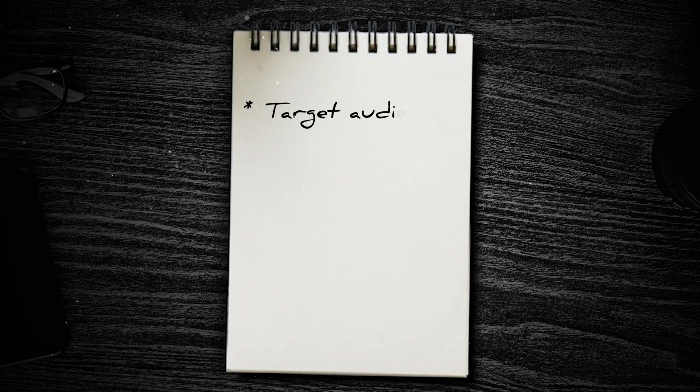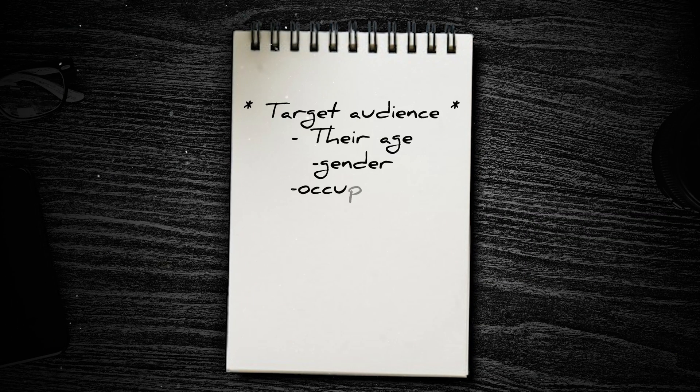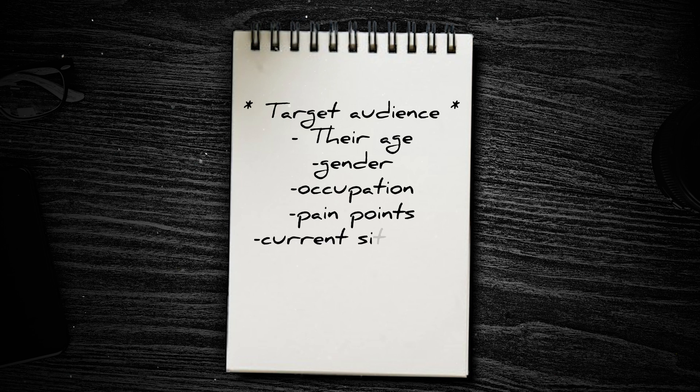Now that you know the types of content you'll be making, let's get into what you need to know before we generate your ideas. Please take a pen and a piece of paper and write down the things I tell you right now. Write down your target audience — who do you want to attract? Think age, gender, occupation, pain points, current situation. The more detailed, the better.